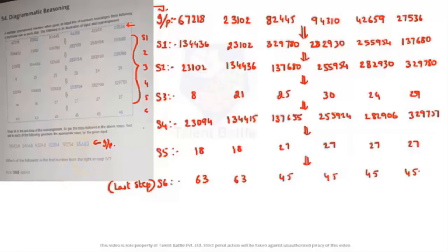They are not asking about step six, only step four, so it is sufficient if you find out till step four. But first we need to know what exactly is happening in between the given steps. The input is the given numbers. Now if you observe, what is the process that happened from input to step one? Pause the video, try for some time, then watch.